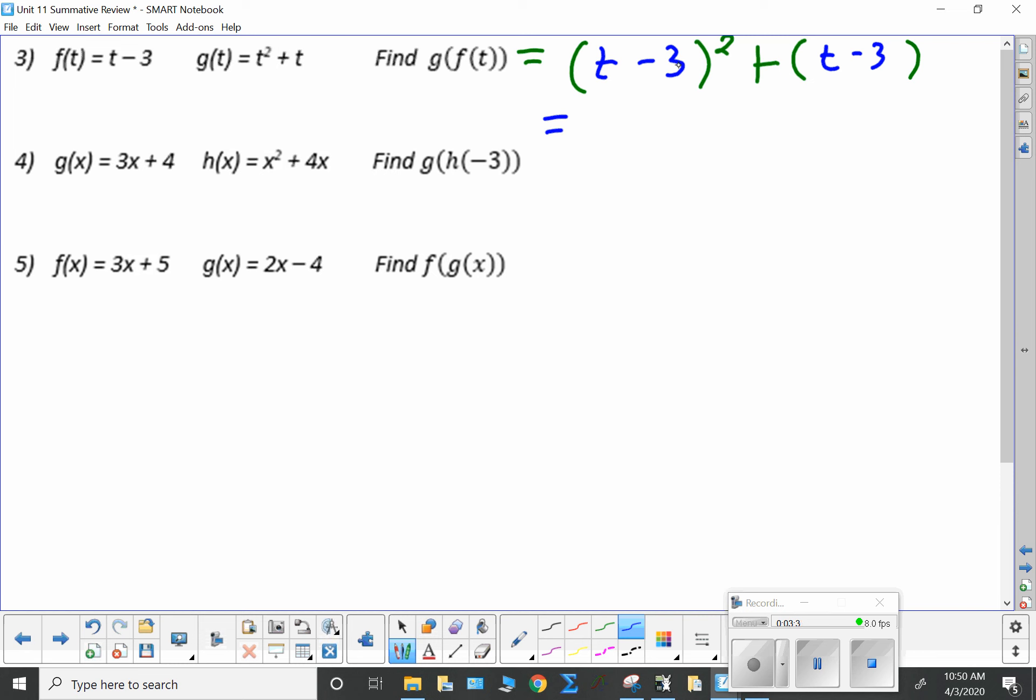Now, t minus 3 squared is going to be t squared minus 6t plus 9. Remember that you have to FOIL that. And then, because this is plus, we don't have to distribute anything. We've got plus t minus 3.